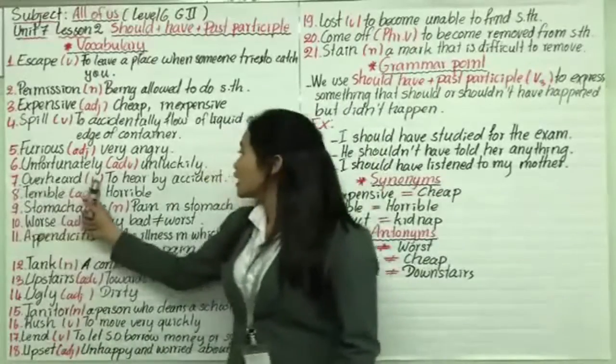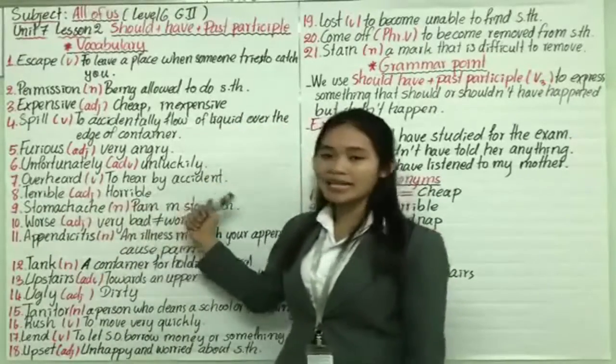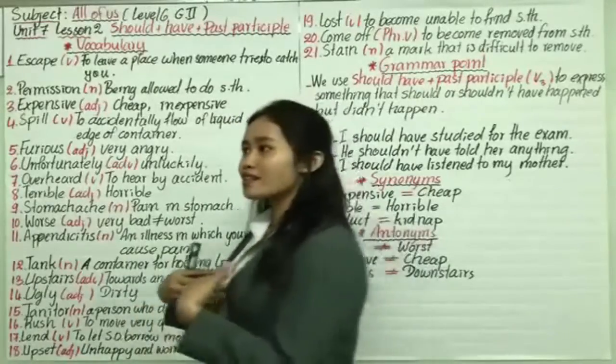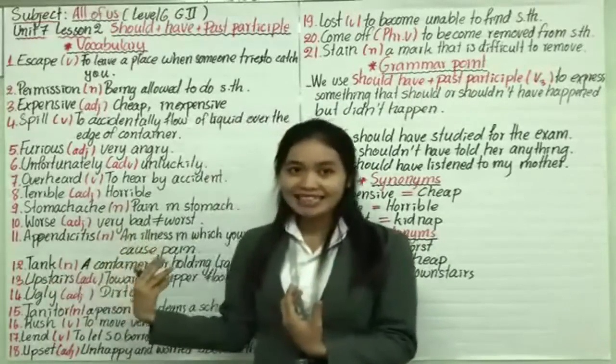Number seven, overhear. Functions as verb, means to hear by accident. When someone talks something bad about you and then you just walk by and you hear about them, it means you hear by accidentally.